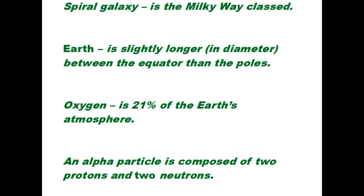The Milky Way is a spiral galaxy. Earth is slightly longer in diameter between the equator than the poles. Oxygen is 21 percent of Earth's atmosphere. Alpha particles are composed of two protons and two neutrons.